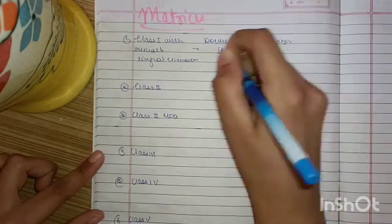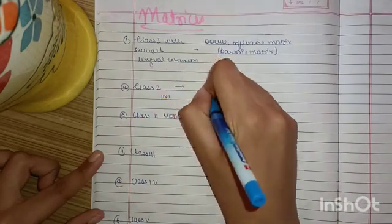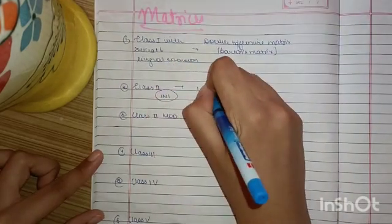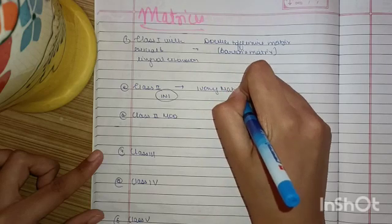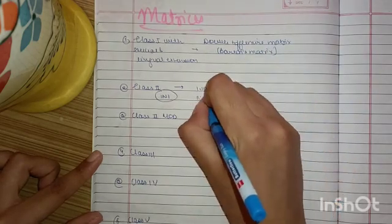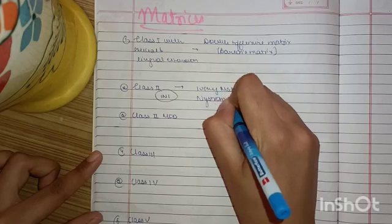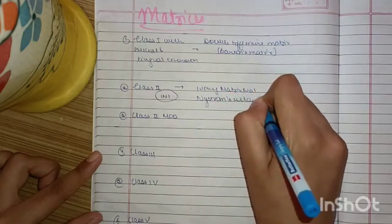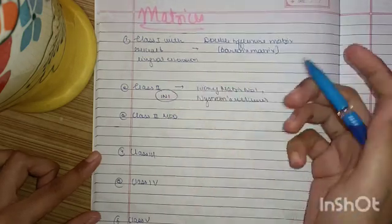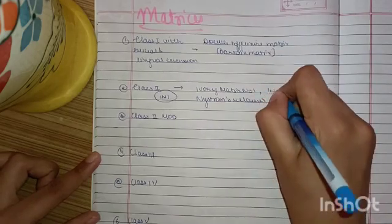Now for the Class 2, you must remember INI. So I stands for ivory matrix number 1. N for Nystrom's retainer. Then by I again, ivory matrix number 8.